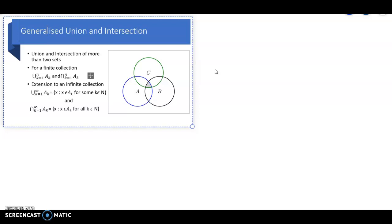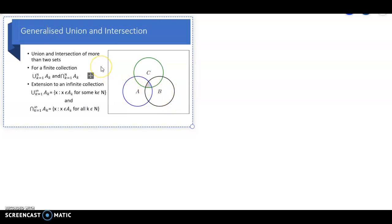The intersection contains all points which are common to the given sets — whether it is two sets, three sets, five sets, a hundred sets, or any number of sets. The intersection of any collection is the collection of all points which are common to all the given sets.